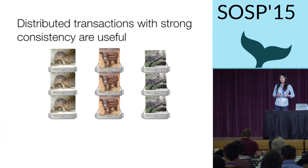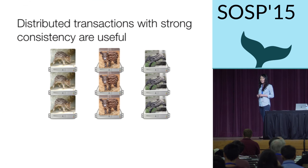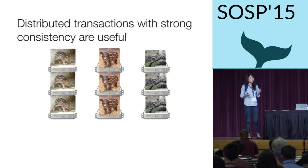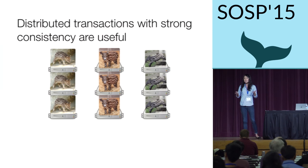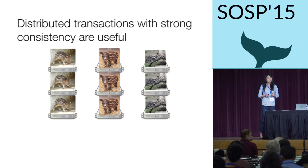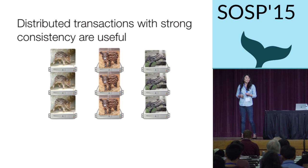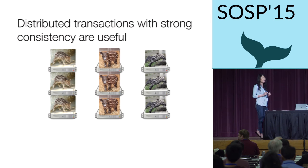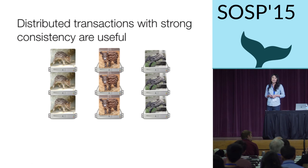In order to make it easy to build my new application, I might want a storage system that provides distributed transactions. Distributed transactions allow me to make sure that all of my friends see my baby tapir photos or none of my friends do, ensuring I don't have angry friends. This is a contrived example, but you can see how a guarantee like that might be important if I were building a medical or financial application.